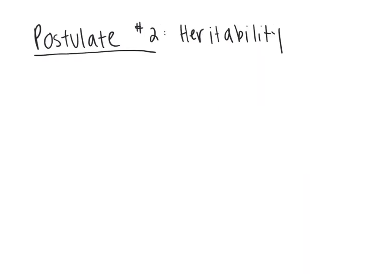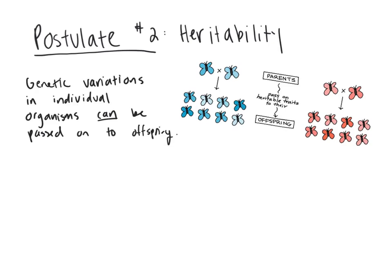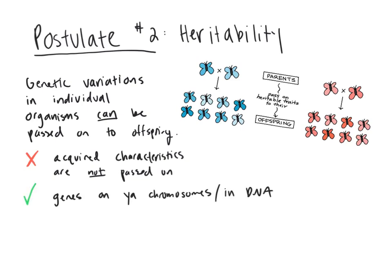The next postulate is heritability. Darwin didn't know about DNA since it wasn't discovered until the 1950s, but he did know that somehow traits were being passed from parents to offspring. Postulate 2 is the idea that genetic variations in individuals within a species can be passed on to offspring. However, any traits acquired during an organism's lifetime are not passed on — it has to be actual genes in your DNA. So, for instance, if I get a freckle, my offspring won't necessarily have a freckle in that same spot.